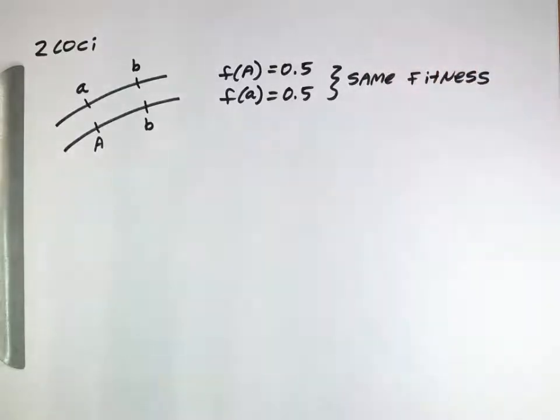We're going to think about them as being a situation in which there's the same fitness. So the capital A allele and the lowercase a allele are neutral. They confer the same fitness. Their frequencies we would expect to be completely determined by drift, just changing over time.